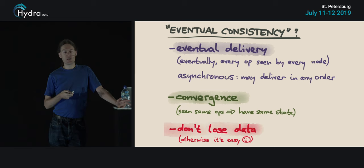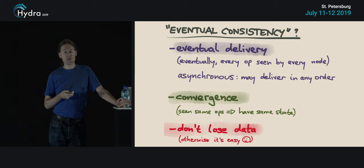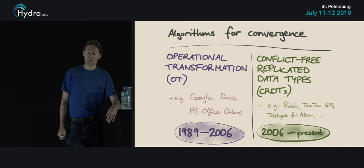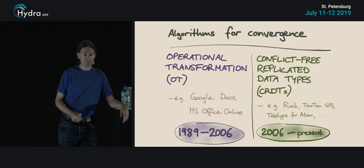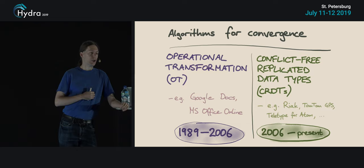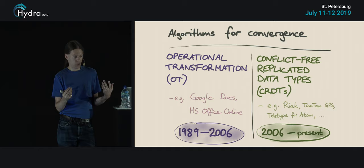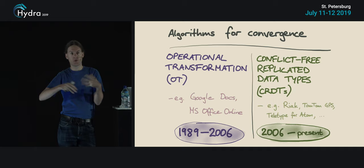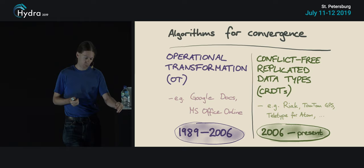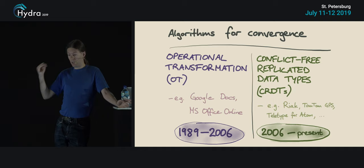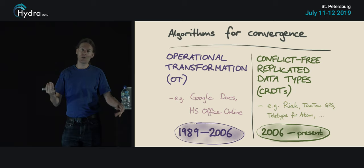There are two families of algorithms developed to achieve this. You might have heard of operational transformation, which is the algorithm used in Google Docs for real-time collaboration, first developed in the late 1980s. It has had a lot of problems — it works quite well when all edits go through a central server, but does not generally work for peer-to-peer communication. For that setting, conflict-free replicated data types — CRDTs — were developed. CRDTs is our main area of research.